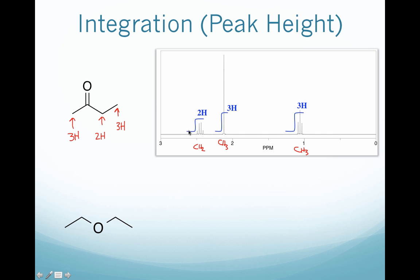In this case, you can see these integral symbols on the spectrum, which represent the area under the curve for that particular signal. We will talk about those a little bit later on, but you can see how each of these signals corresponds to the number of hydrogen that it represents.